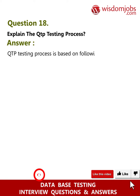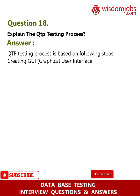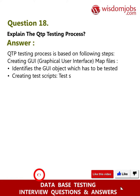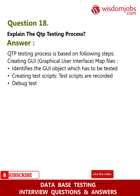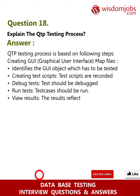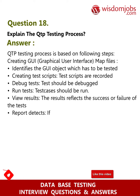Question 18: Explain the QTP testing process. Answer: The QTP testing process is based on the following steps: creating GUI (Graphical User Interface) map files that identify the GUI objects to be tested; creating test scripts that are recorded; debugging tests; running test cases; viewing results that reflect the success or failure of tests; and generating a report that records reasons if a test fails.